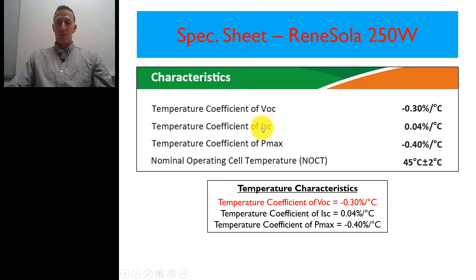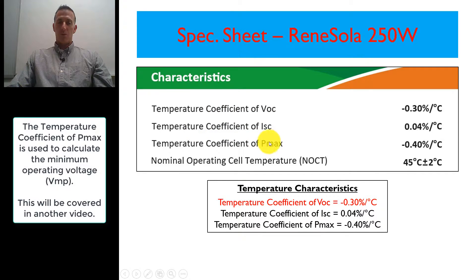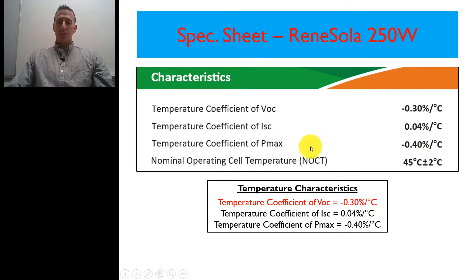Another one would be the ISC, which would be the short circuit current. And there's also one for the Pmax, or the module wattage. And then there's a nominal operating cell temperature.